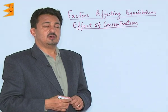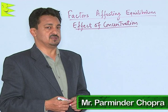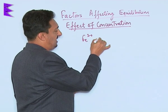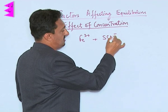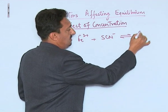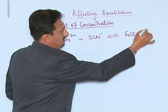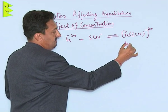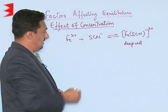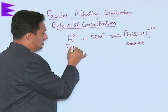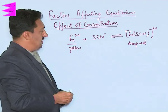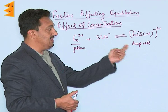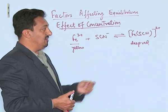Let us take an example of a reaction to understand the effect of concentration on equilibrium. When ferric ions are reacted with thiocyanate ions, a complex is formed and the color of this complex is deep red. We know ferric ions in aqueous solution are yellowish in color. When the yellow colored ferric ion solution is reacted with thiocyanate ions, the solution color becomes deep red due to the formation of this ferric thiocyanate complex.